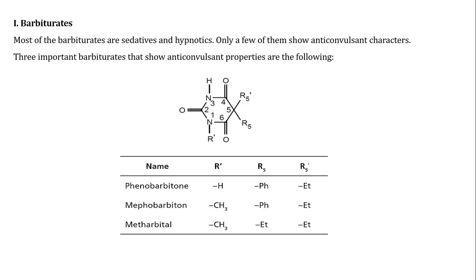In previous lectures, we have already discussed Barbiturates and their derivatives in the topics of sedatives and hypnotics and also in anti-psychotic drugs. Most of the Barbiturates are sedative and hypnotics, and only a few of them show anti-convulsant character. Three important Barbiturates that show anti-convulsant properties are Phenobarbitone, Mephobarbitone, and Metharbital.